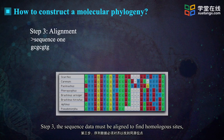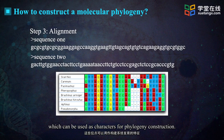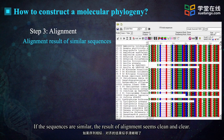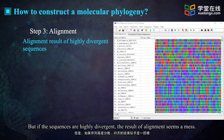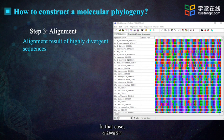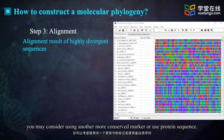Step three: the sequence data must be aligned to find homologous sites, which can be used as characters for phylogenetic construction. If the sequences are similar, the result of the alignment seems clean and clear, with only a few variable sites. But if the sequences are highly divergent, the result of alignment seems a mess and it is difficult to find homologous characters. In that case, you may consider using a more conserved marker or using protein sequences instead.